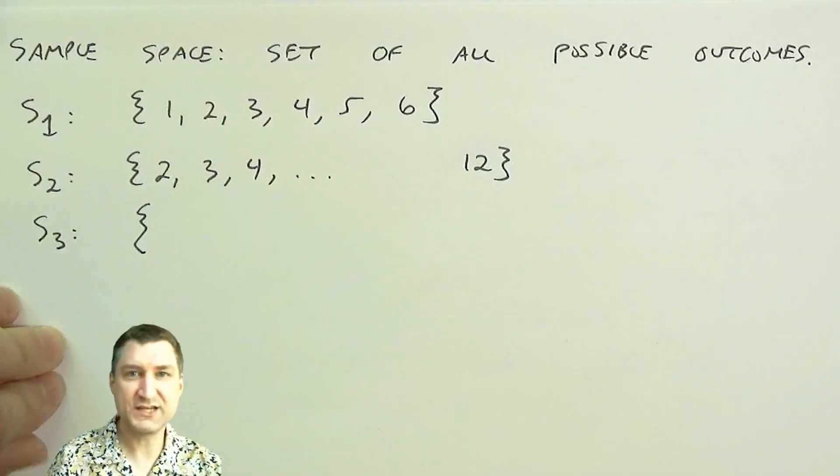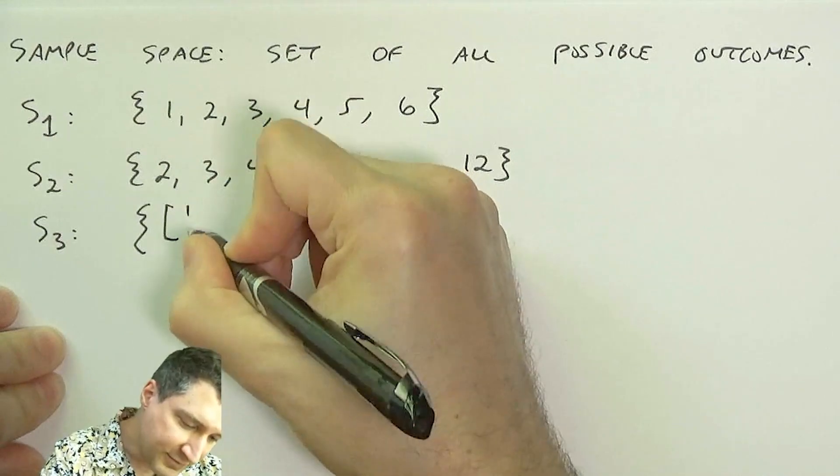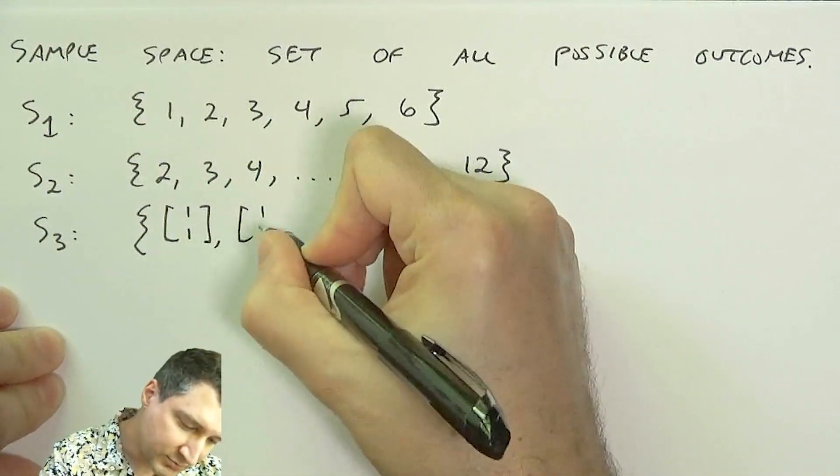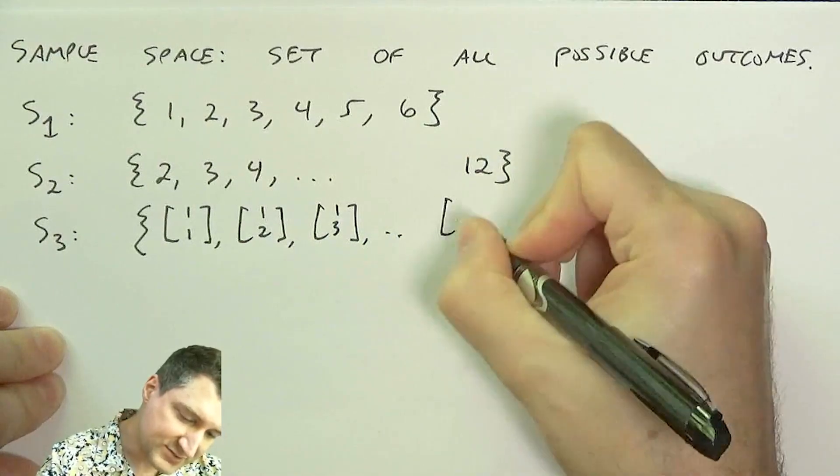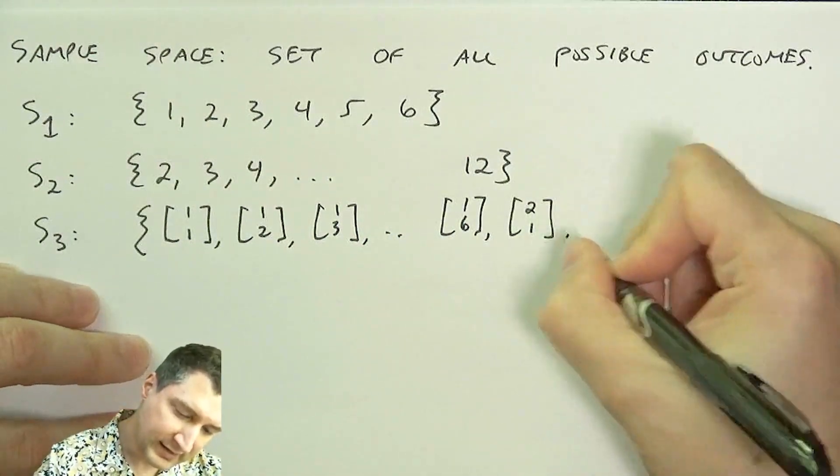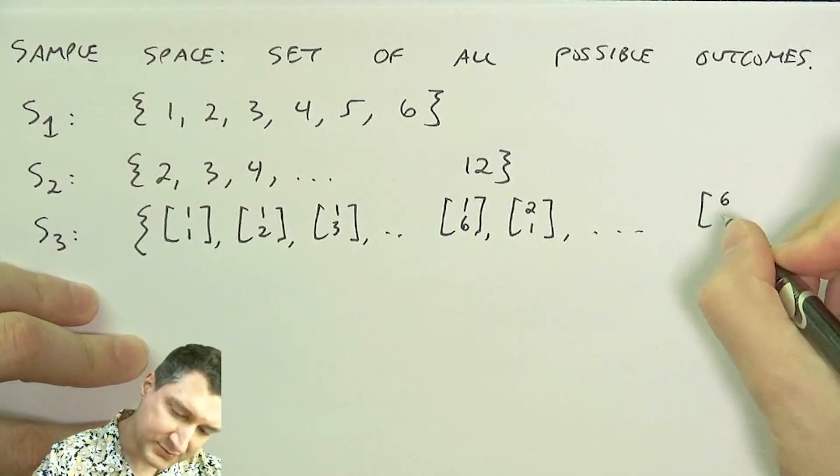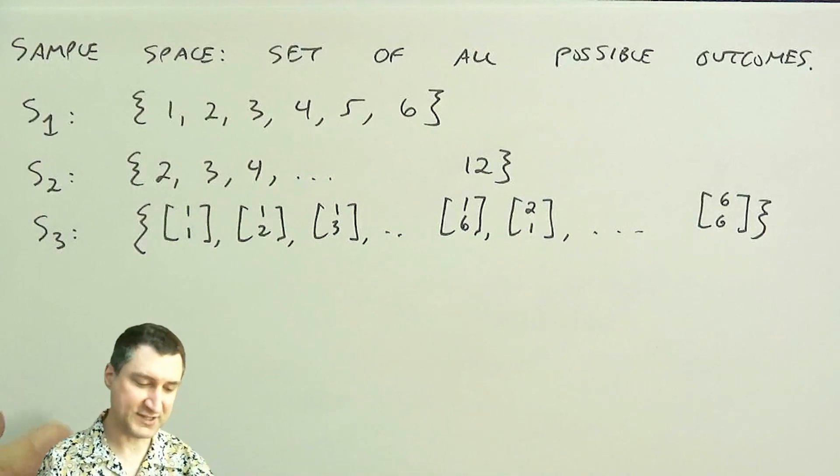In the case where I'm rolling those two dice, but I'm recording each of the outcomes individually, then I have 36 possible outcomes, which I could enumerate like a set of 2D vectors, right? So I have kind of first die comma second die, and that goes all the way up to six, six, right? That's the 36th outcome.